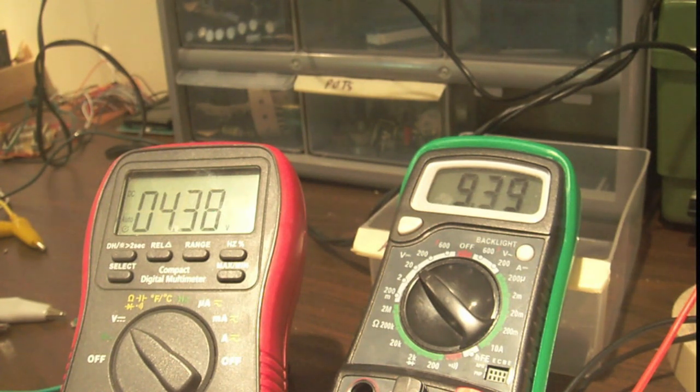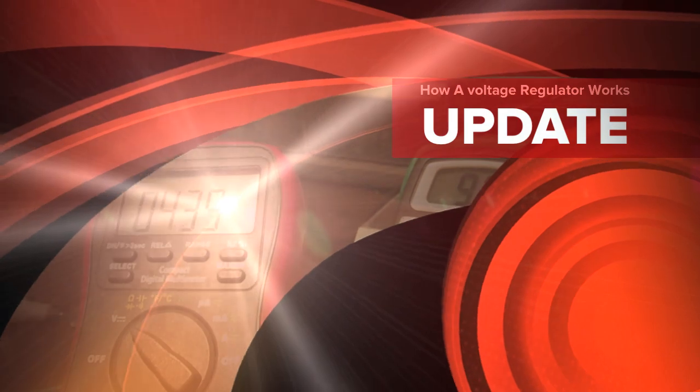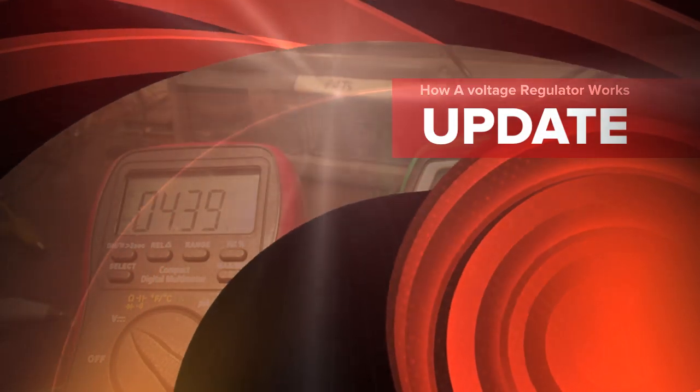But that's how a voltage regulator works, and that's building a simple one. Really, all you need is an unregulated input, a voltage reference, an op amp, two transistors, a resistor, and a cap. That's all you need. It's that simple.